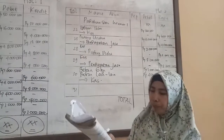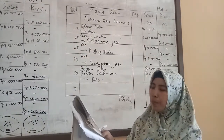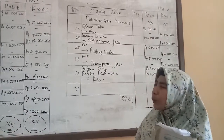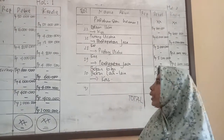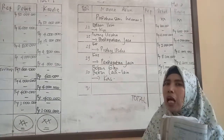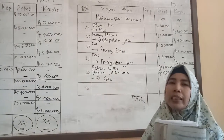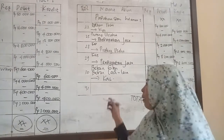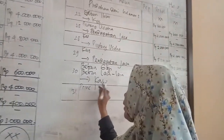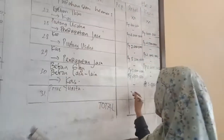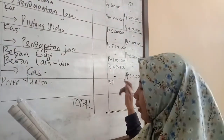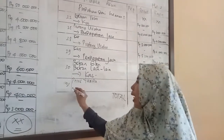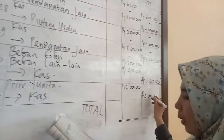Transaksi terakhir, pengeluaran kas sebesar Rp2.000.000 untuk keperluan pribadi Yunita. Kalau ditulis dalam akuntansi, keperluan pribadi namanya prive. Prive Yunita termasuk dalam kelompok modal. Kelompok modal bertambah di sebelah kredit, berkurang di sebelah debit. Prive berkurang modal, berarti pada posisi debit Rp2.000.000. Kas perusahaan pun berkurang sebesar Rp2.000.000 pada posisi kredit.